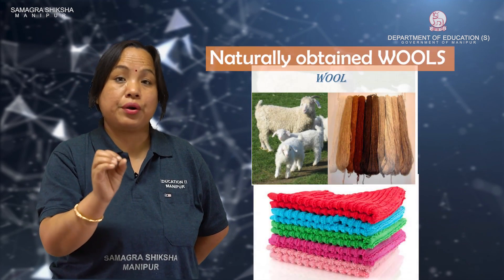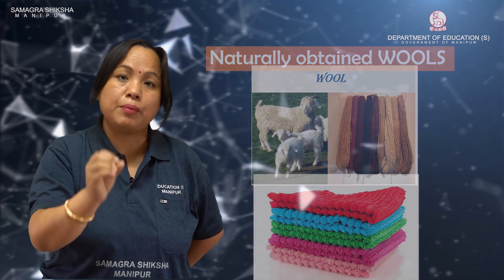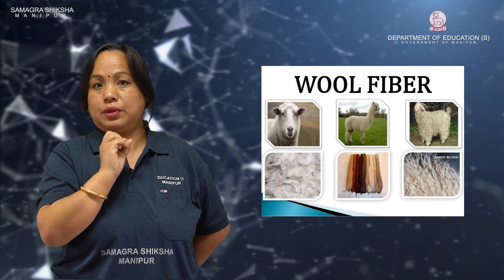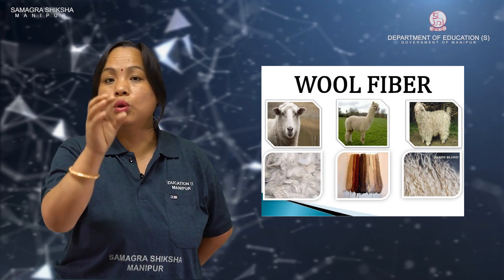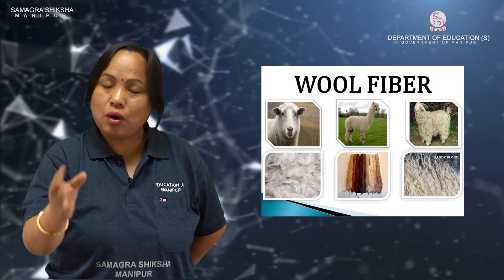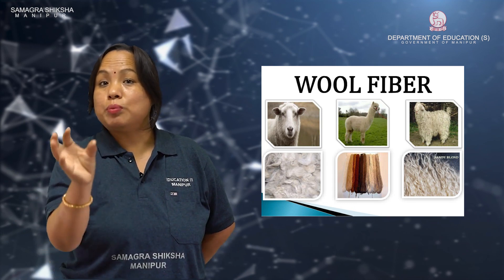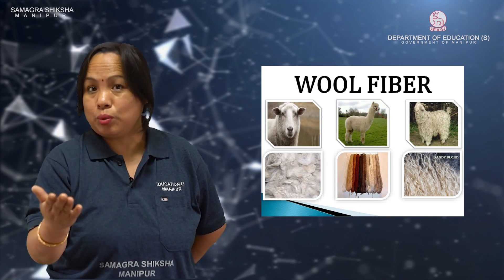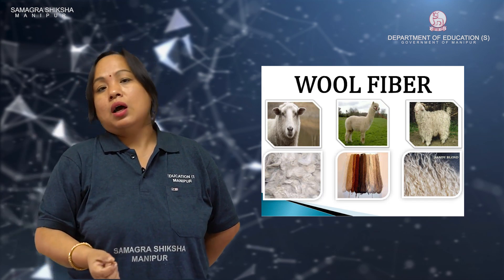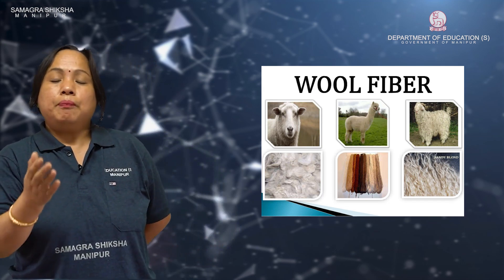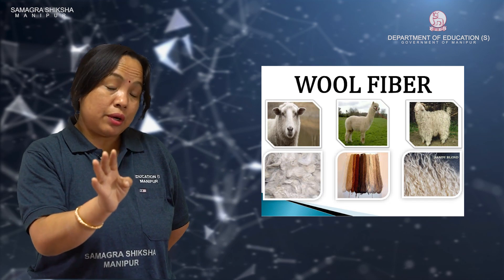Acrylic resembles wool, which we get from animals. Wool is a naturally occurring fiber. We use wool, but acrylic is a synthetic alternative.